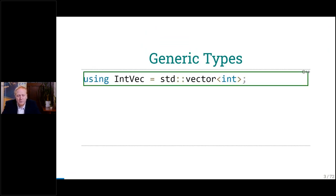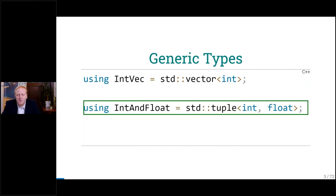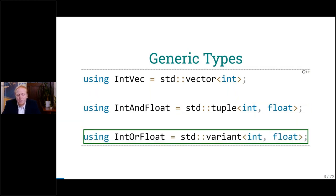What we have in C++, for example, are generic types — like a vector of int in the standard library. We also have a tuple, where we store different types in the same type at once. And we have something like a variant, where we either store one or the other type. Is this already metaprogramming? I don't know — maybe it is, maybe not. It depends on your perspective.